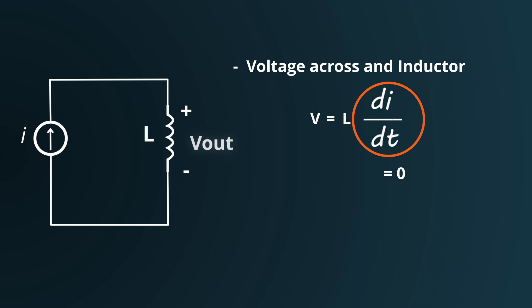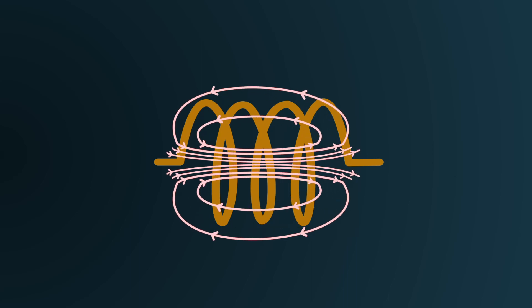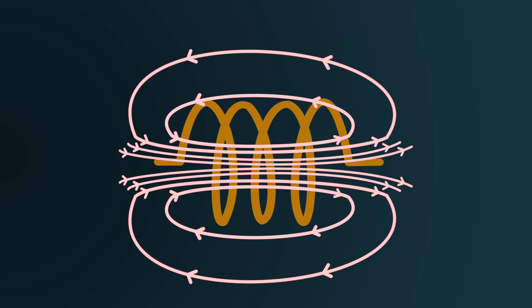We will not get into too much detail of why this happens in this video. But very briefly, when the current flowing through the inductor alters, the magnetic field generated around the wire also changes. This shifting magnetic field, when intersecting with a conductor like our wire, induces a voltage.